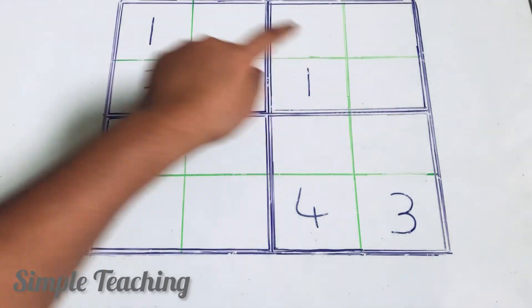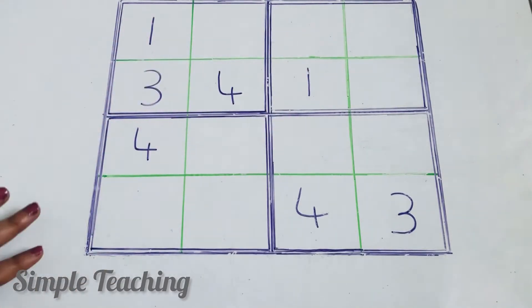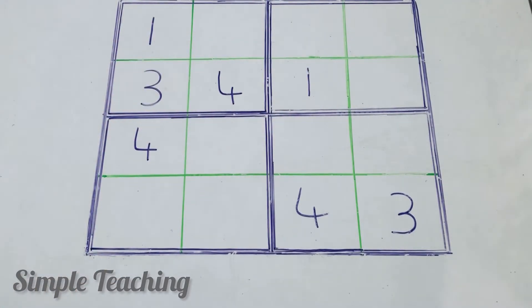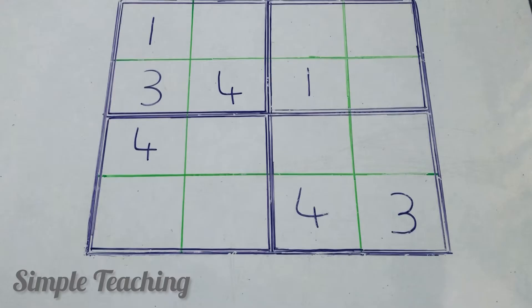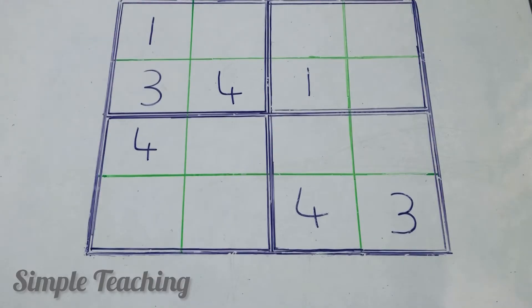In each row or column, the numbers must be 1, 2, 3, 4, and each number must come only once. It should not be repeated. That is the rule.